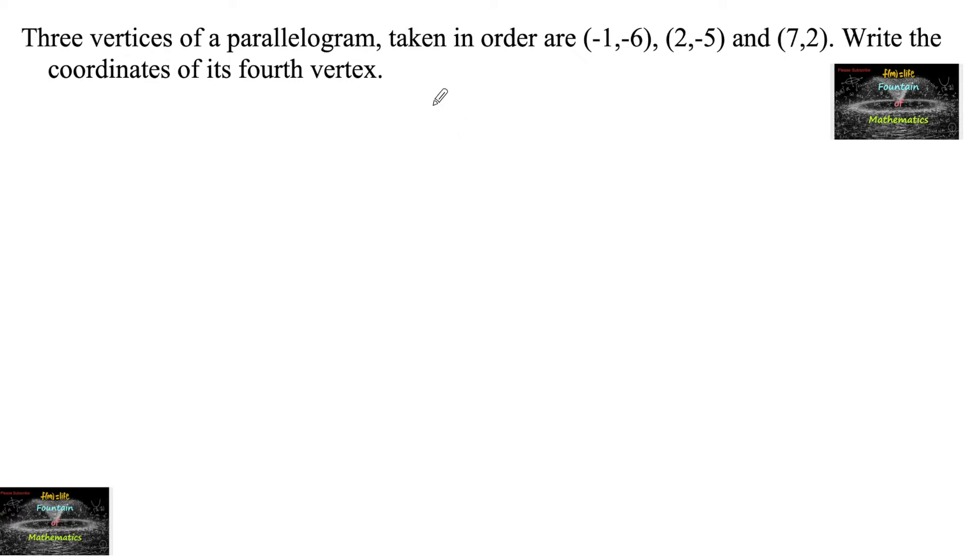Three vertices of a parallelogram taken in order are (-1,-6), (2,-5), and (7,2). Write the coordinates of its fourth vertex.